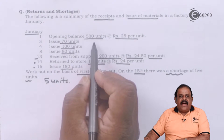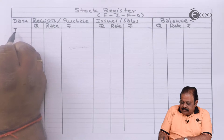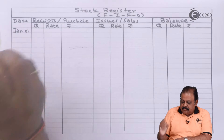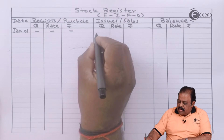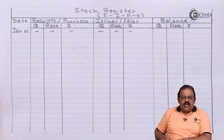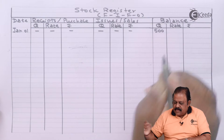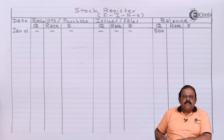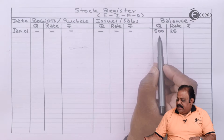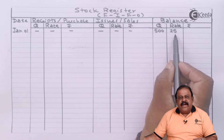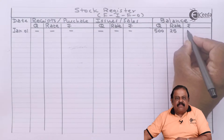On January 1st, there is an opening balance of 500 units at the rate of rupees 25 per unit. In the receipt column we put a dash, in the issues column we put a dash. In the balance column, we record the opening balance: quantity is 500 units, rate is rupees 25 per unit. The value is calculated as 500 multiplied by 25, giving a stock value of rupees 12,500.